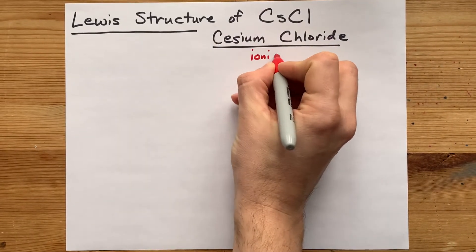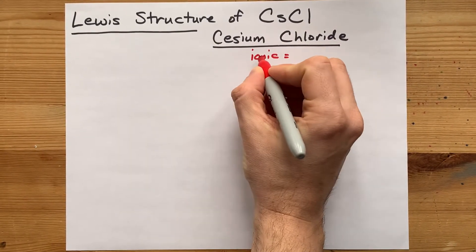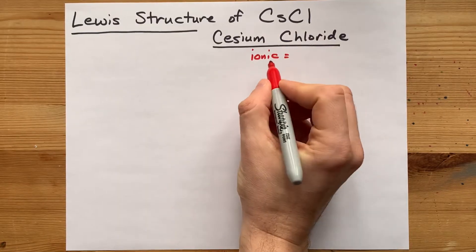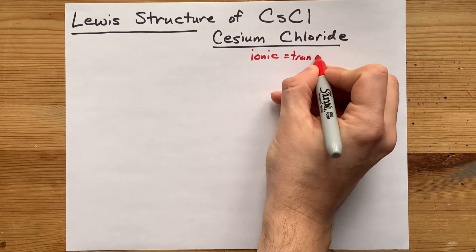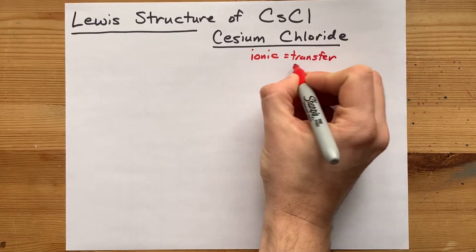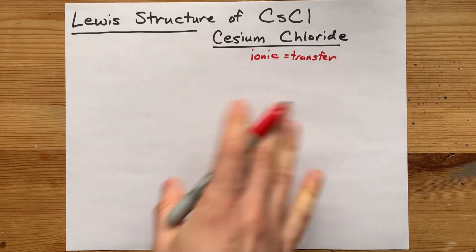The reason that's important is these two together, metal plus non-metal, make an ionic compound. Ionic compounds have a transfer of electrons from one to the other.